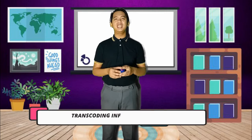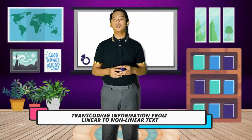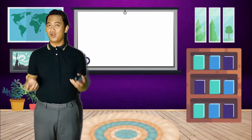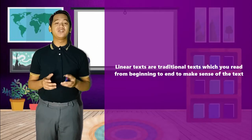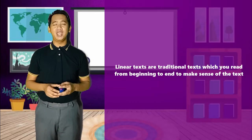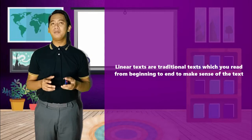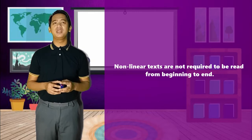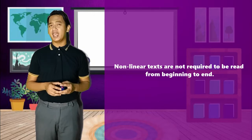Can you still recall what we discussed last episode? Right you are! We discussed about transcoding information from linear to non-linear text and vice versa. So, what are linear and non-linear texts? Of course, linear texts are traditional texts which you can read from beginning to end to make sense of the text, while non-linear texts are not required to be read from beginning to end.